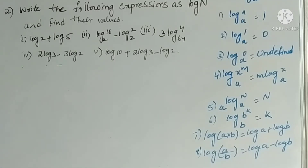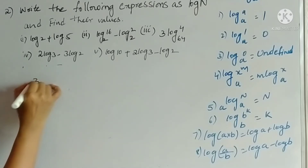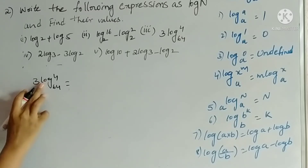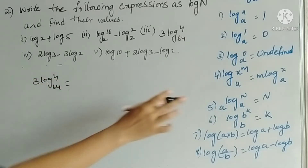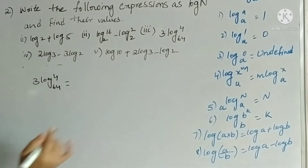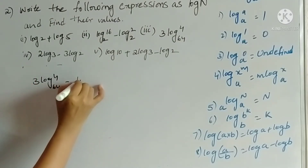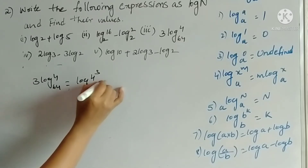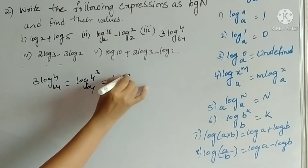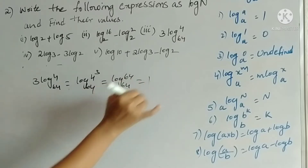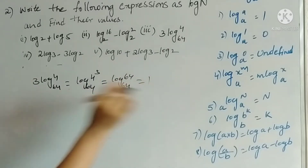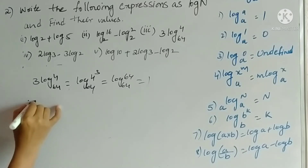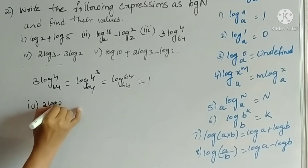The third one is 3 log 4 base 64. Using the property m log x base a equals log(x power m) base a, this becomes log(4 cubed) base 64, which is log 64 base 64. And log 64 base 64 equals 1.